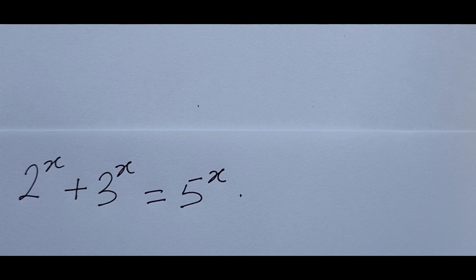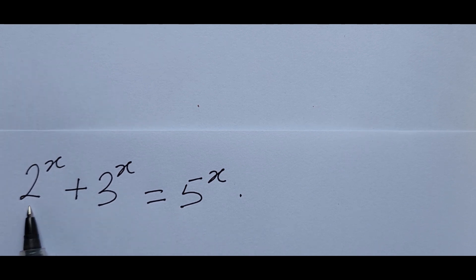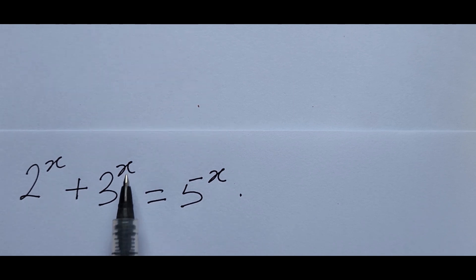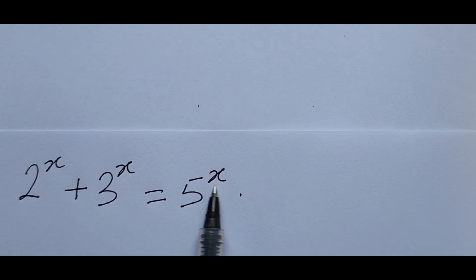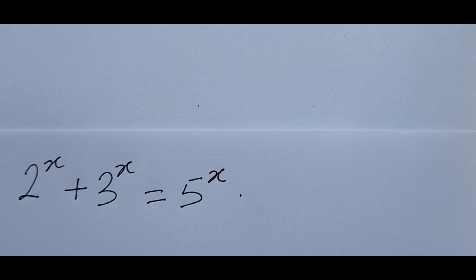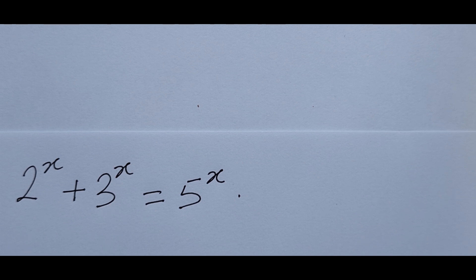If we put in x = 1: 2 to the power of 1 gives us 2, 3 to the power of 1 gives us 3, and 5 to the power of 1 gives us 5. We know that 2 plus 3 gives us 5. So the only thing we want to do here is show that 1 is the only real solution to this challenge.